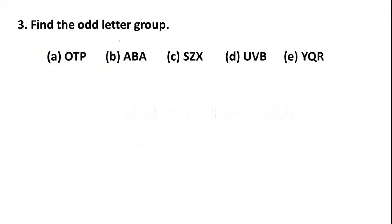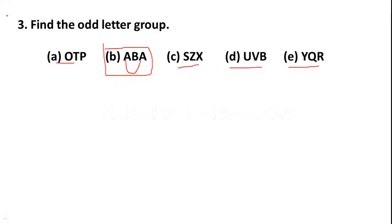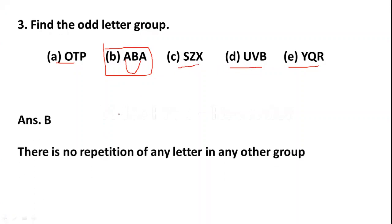Question 3: Find the odd letter group. Option A: OTP, Option B: ABA, Option C: SZX, Option D: UVB, Option E: YQR. Option B is the odd letter group. Why? Because here the letter A has been repeated two times. In all other options, no letter is repeated. So Option B (ABA) is the right answer — there is no repetition in any other option.